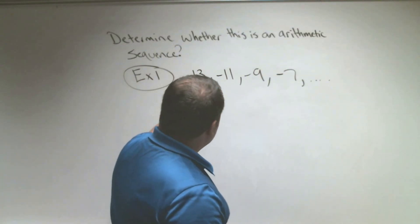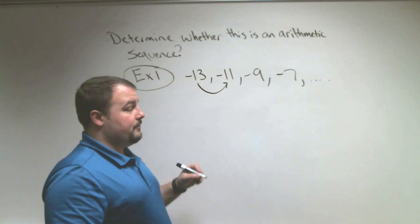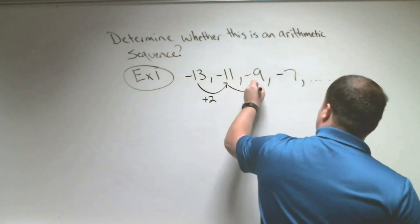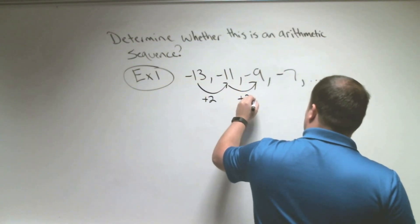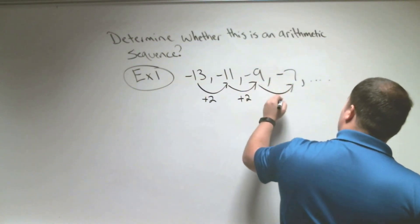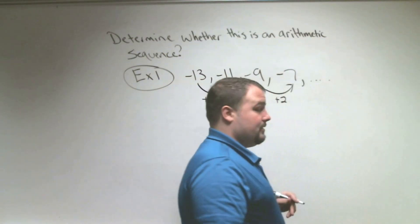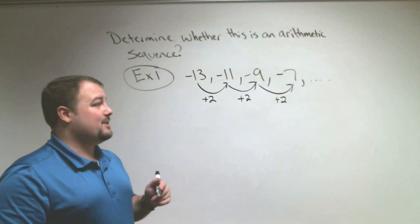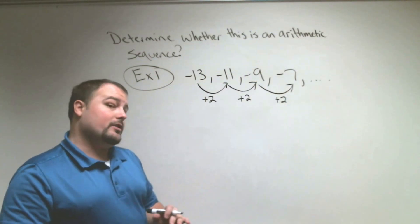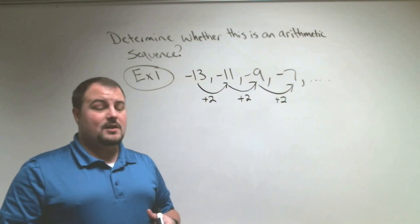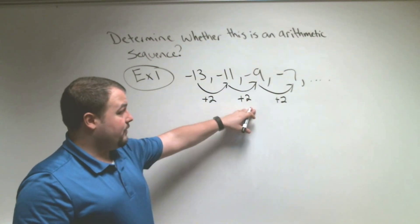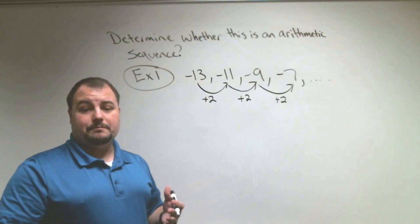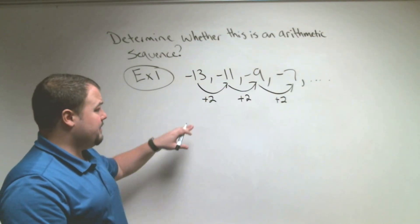In order to be an arithmetic sequence, the pattern has to be adding or subtracting the same number. So we're looking: how do I go from negative 13 to negative 11? I add 2. How do I go from negative 11 to negative 9? I add 2. How do I go from negative 9 to negative 7? I add 2. Since we're adding the same number every time, this is an arithmetic sequence.